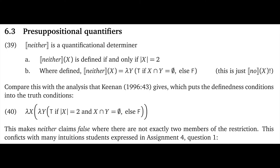Once again, we see that Keenan wants to turn everything into regular semantic content — no presuppositions. His version is just like 39, except that it packs the defined-in-this-condition 39a in as a conjunction with the regular content. So this means that 'neither student studied' is false if there are more than two students. And that just seems strange — it gets stranger when you consider that 'it's false that neither student studied' will then become true solely because there are more than two students.